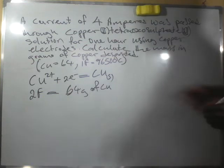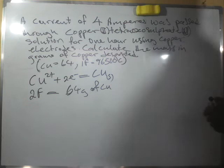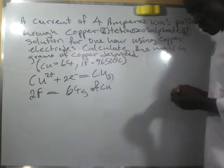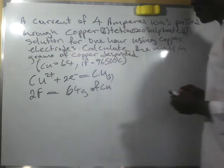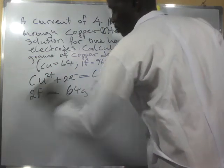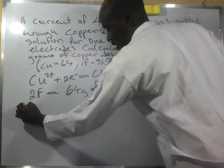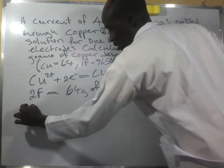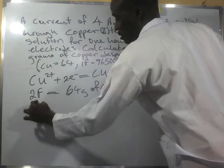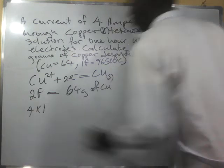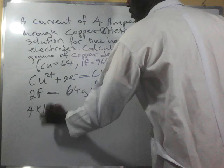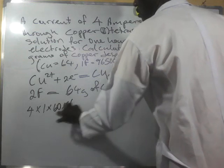In this case, we have 4 amperes of electric current. To do that, we know that the quantity of electricity Q equals I times t, which is 4 times 1 hour times 60 times 60.